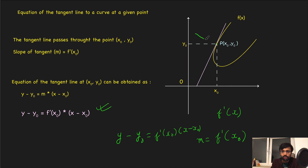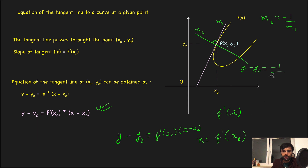Now if we ask: what is the equation of normal? The normal passes through the same point (x₀, y₀) and is perpendicular to the tangent. If the tangent slope is m1 and the normal slope is m2, then m1 × m2 = -1, so m2 = -1/m1. Therefore the equation of normal is: y - y₀ = (-1/f'(x₀))(x - x₀). Just understand: tangent slope is the derivative, and normal slope is -1 divided by the tangent slope.